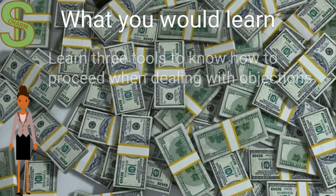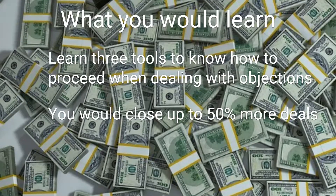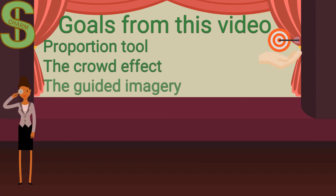In this video, you would learn three other great tools to proceed when dealing with objections. When you know what to say and how to react to the customer's concerns, you can close up to 50% more deals than before. At the end of this video, you will know how to use the Proportion tool, the Crowded Effect, and the Guided Imagery to overcome the customer's fears.